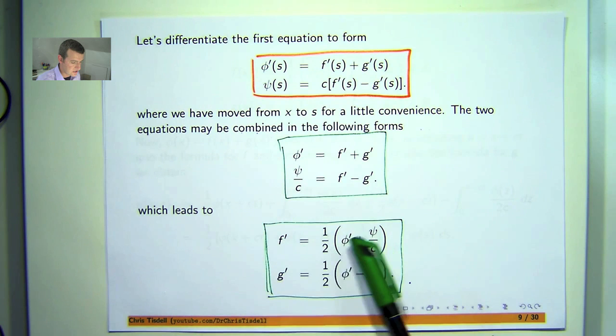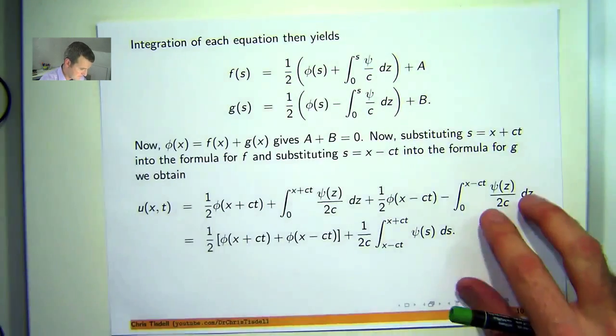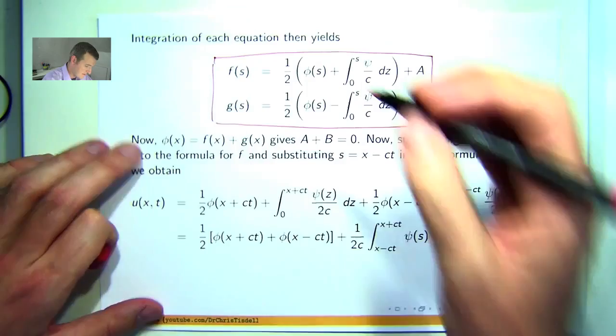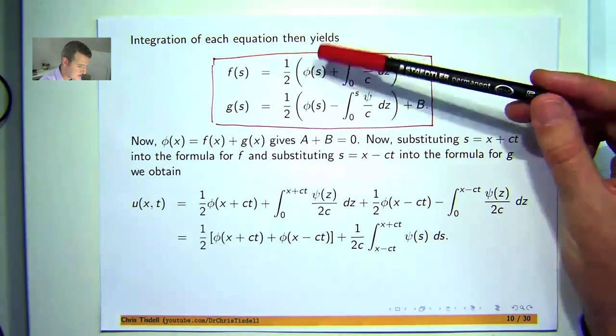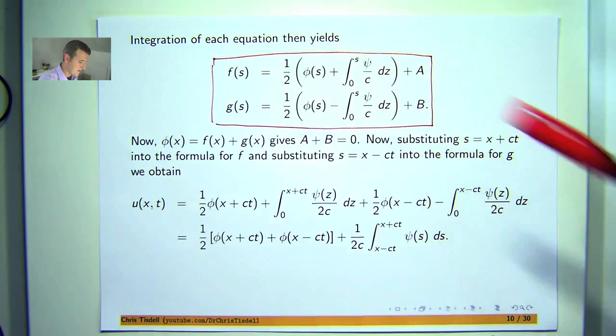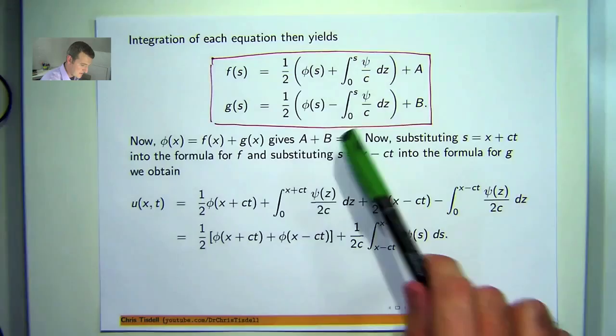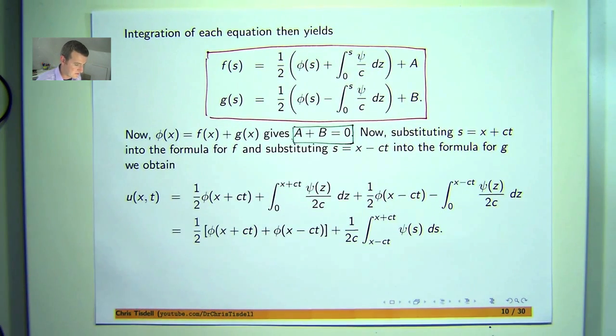Now, I can find f and g in terms of phi and psi just by integrating. So if I integrate, I get the following expressions. Here a and b are constants. And if I add these two expressions together, well that's going to cancel out and that's going to cancel out. I'm going to get f plus g equals phi plus a plus b. Now, phi, from back here, phi equals f plus g. So this means that when I add these two expressions together, the a plus b constants must equal zero.